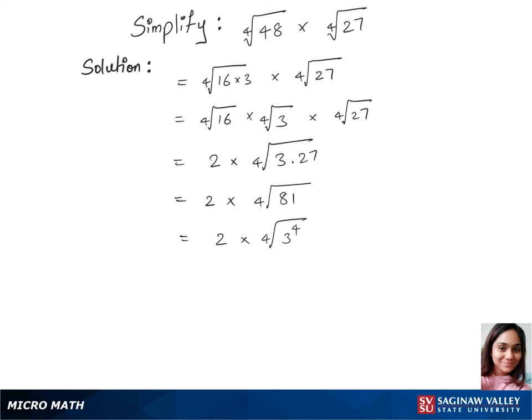And now we have 2 times, so this gets cancelled, power 4 and root 4, so what remains with us is 3. So 3 times 2 is 6, that's our final answer.